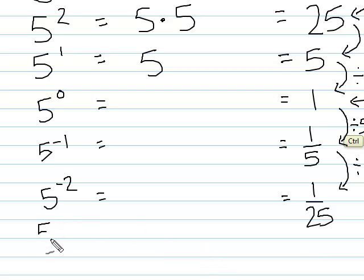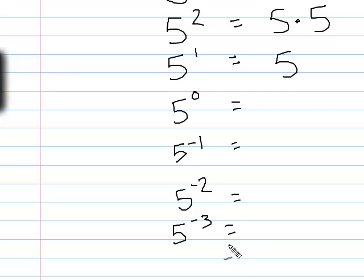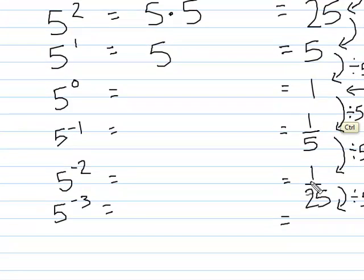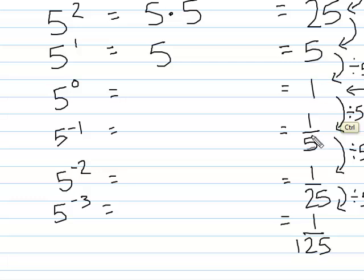Five to the negative third power: to find that I divide by five again. One over twenty-five divided by five is one over one hundred twenty-five. I notice a pivot point around the one: five and one-fifth, twenty-five and one over twenty-five, one hundred twenty-five and one over one hundred twenty-five — that's a pretty important relationship.